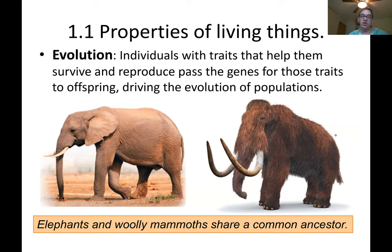And then evolution: individuals that have traits that allow them to survive and reproduce in their current environment pass those beneficial genes on to their offspring, giving them an advantage. Passing on genes for those particular traits drives evolution of certain properties over time. For example, modern-day African savannah elephants are ancestors of the woolly mammoth - they have genes in common.